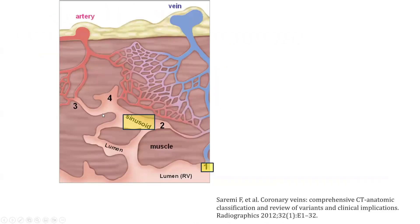Now let me explain those Thebesian veins. There is a lot of debate about it, but here is a histological description. Normally, blood drains from the myocardial capillary into the major coronary venous system, which ends into the coronary sinus. But there is a smaller venous system — rather than draining into that major coronary sinus system, there is a more minor venous system, the Thebesian vein system, where those veins drain directly into a cardiac cavity, whether right or left, atrial or ventricular.